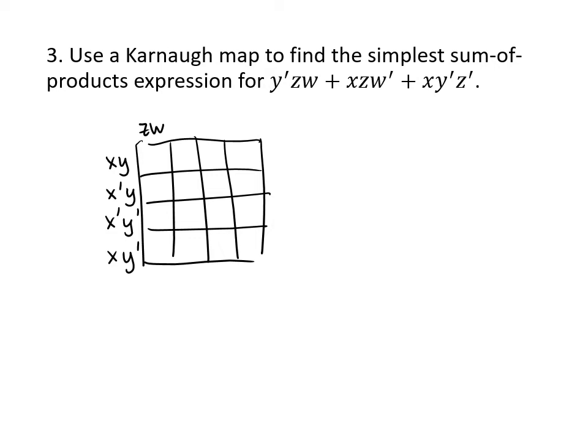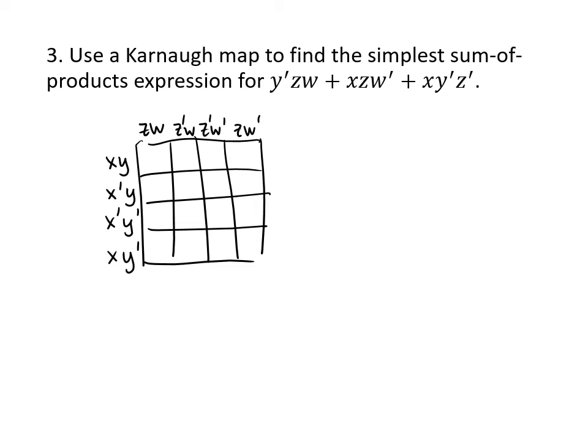As you go down, those rows change one variable at a time. I changed x to x prime but kept y the same. Then changing x prime back to x would give x y which I already had, so instead I change y to y prime to get x prime y prime, and then x prime y prime becomes x y prime — the one combination not yet used. It's equally correct to label the rows as x y, x y prime, x prime y prime, and then x prime y. That's just a different but equally valid way to label them.